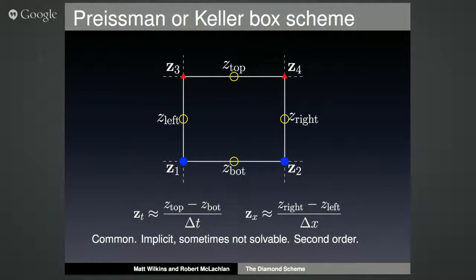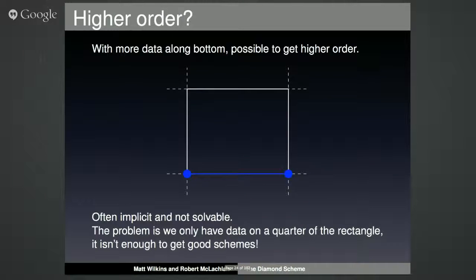This method we've just described is a very common scheme. However, you may notice that z2 and z4 of a given rectangle are actually the z1 and z3 of the neighboring rectangle, so all the cells are coupled together. That makes for a really big implicit solve that is sometimes not even solvable — that's why there are so many papers written about it, since you have to prove solvability for each particular PDE. It's also only second order. For a higher-order method, people have proposed using more data along the bottom edge, but this suffers from the same problem: it's often implicit and even harder to prove solvable.